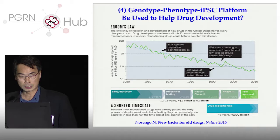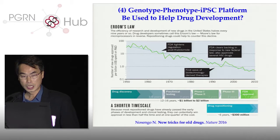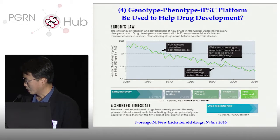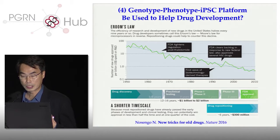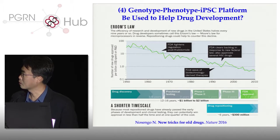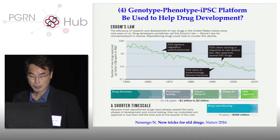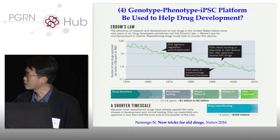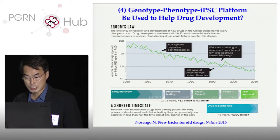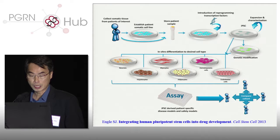The next topic is how we use the genotype-phenotype iPSC platform to help drug development. Everyone has heard about Moore's Law — every two years, computer chip speed doubles. This is Eroom's Law: essentially, every seven to eight years, the number of drugs approved by the FDA decreases by half — ironically called Eroom's Law. It costs on average $1-2 billion and 12-16 years to get a drug to market. The question is, can we use iPSCs to help with this?